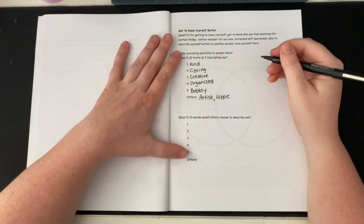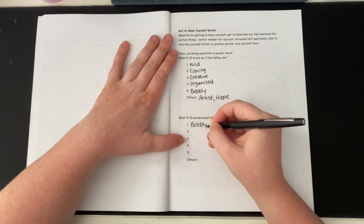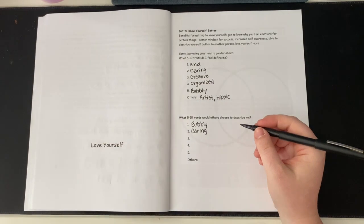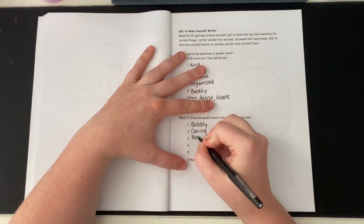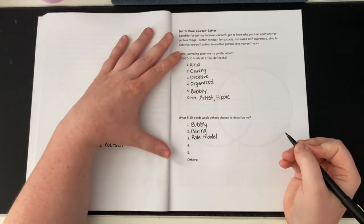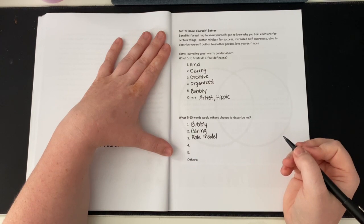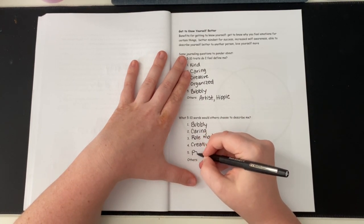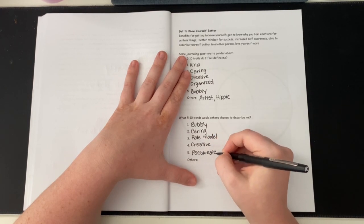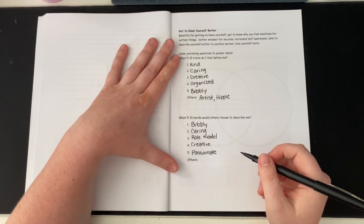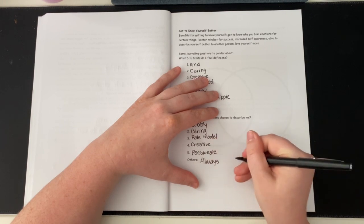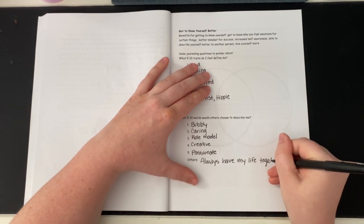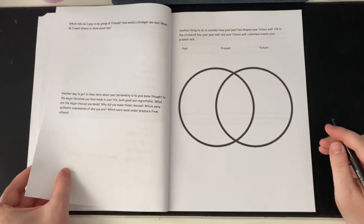Would others choose to describe me? Okay, well, bubbly is number one. All my friends say that. All my friends say that I'm caring. A lot of my friends say that I am a role model. Which I'm like, I don't know about that. But okay. Other people would say that I'm very creative also. And passionate. Always have my life together. Even though I don't. But a lot of my friends see me like that. And I'm just like, I wish. I wish I had my whole life together.